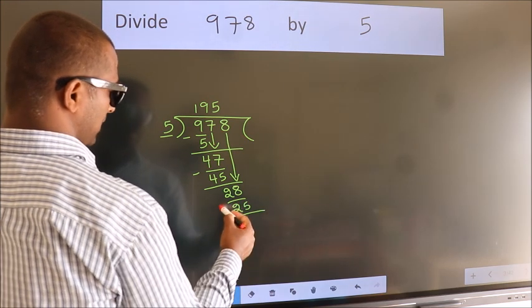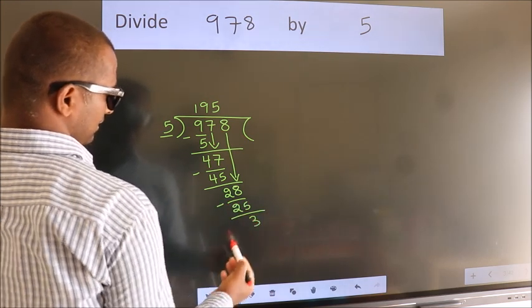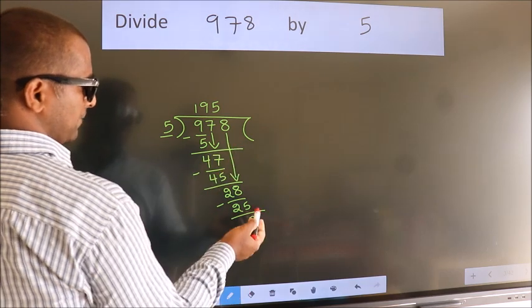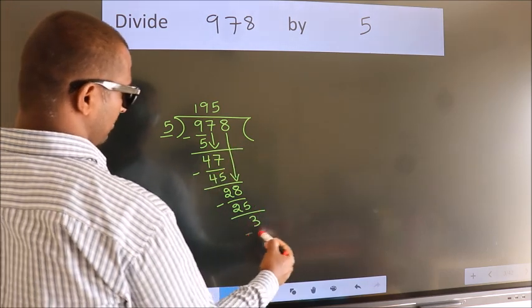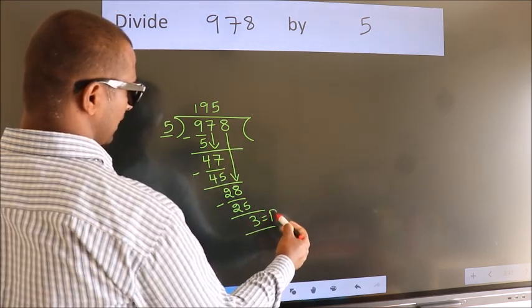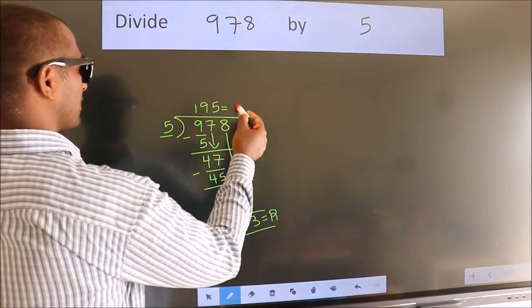Now we subtract and get 3. No more numbers to bring down, so we stop here. This is our remainder. This is our quotient.